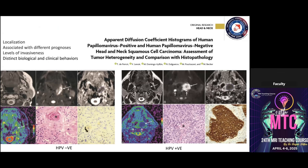We have to localize the disease precisely because prognosis differs by location. A tongue carcinoma with tonsillar extension and a tonsillar carcinoma infiltrating into the base of tongue will have different prognoses, different levels of invasiveness, and different biological and clinical behaviors.